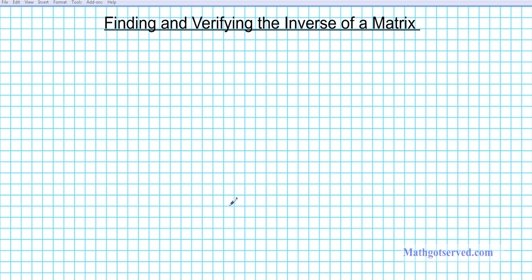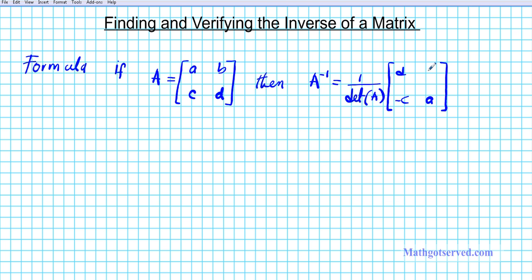So before we get started, let's go over what the formula is for finding the inverse of a matrix. If matrix A, the square 2 by 2 matrix is A, B, C, D, then the inverse A to the negative 1 is going to be 1 over the determinant of A multiplied by what you get when you switch the diagonals D, A, and take the opposite of the wings, negative C, negative B. So this is the formula for finding the inverse of a matrix.